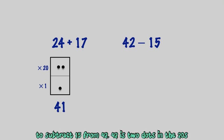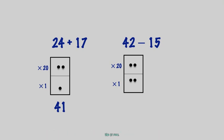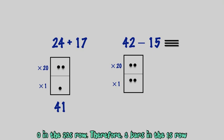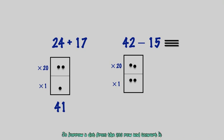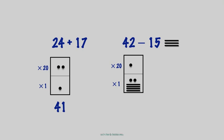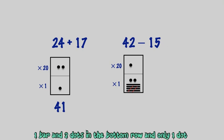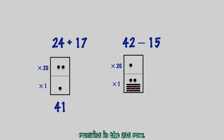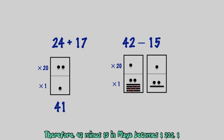To subtract 15 from 42: 42 is two dots in the 20s row and two dots in the 1s row, and 15 is three bars in the 1s row with zero in the 20s row. Since three bars in the 1s row are needed for the subtraction, borrow a dot from the 20s row and convert it to four bars in the 1s row, giving a total of two dots and four bars in the bottom row. Then subtract 15 by canceling three bars, leaving one bar and two dots in the bottom row, and only one dot remaining in the 20s row.